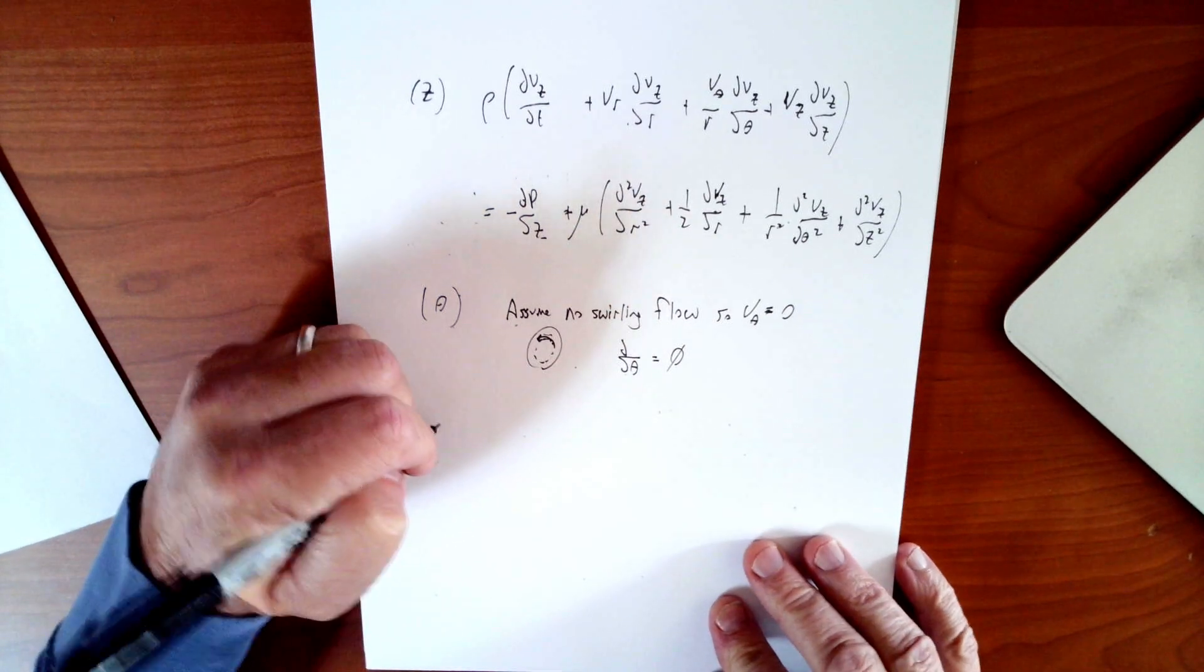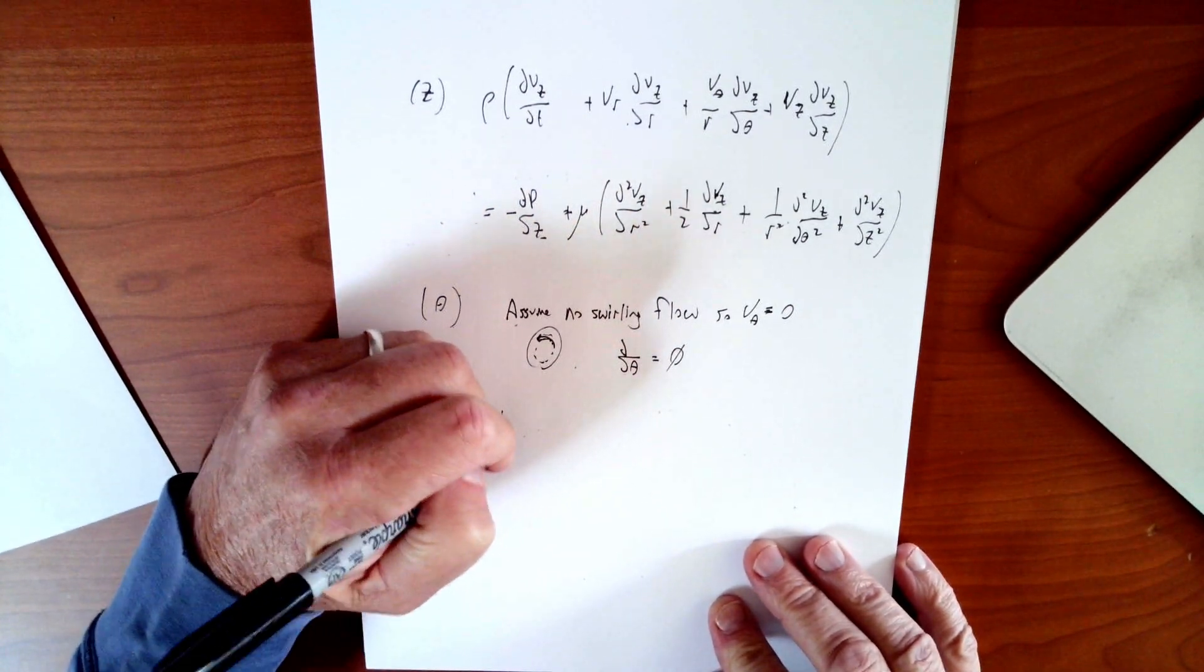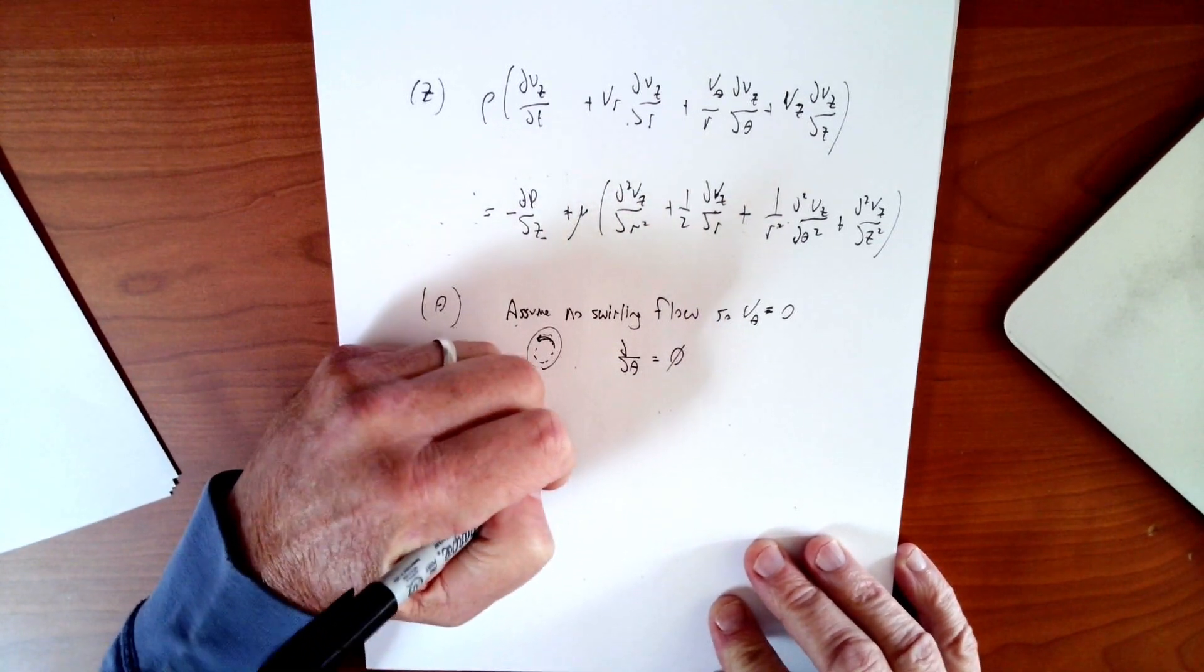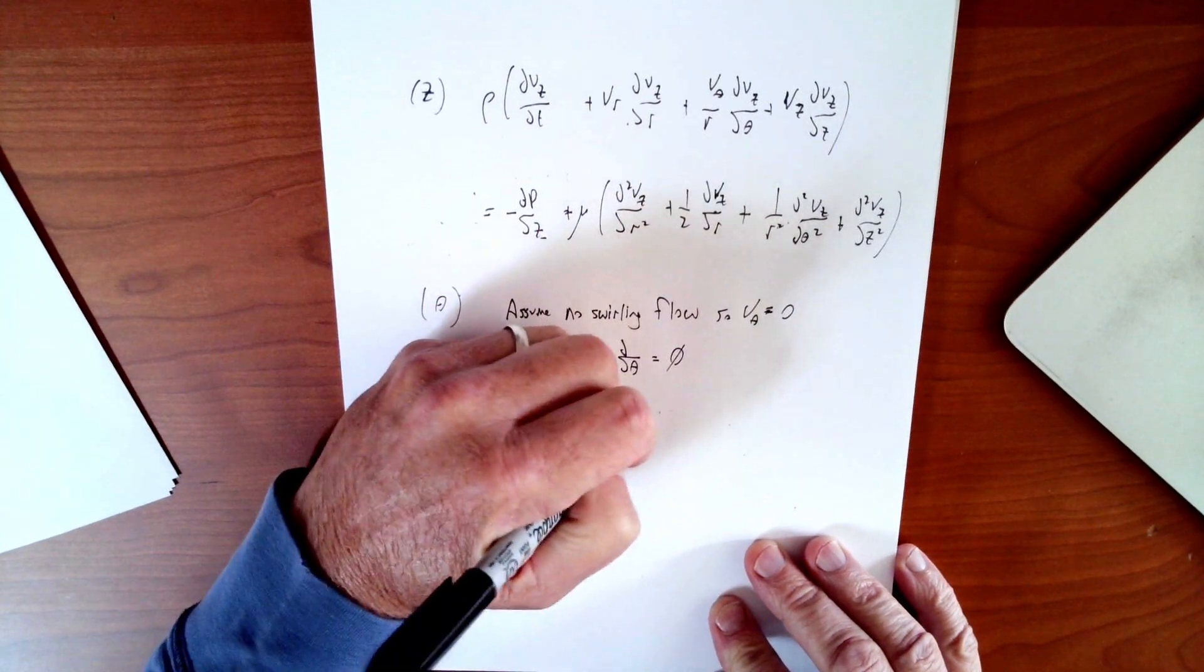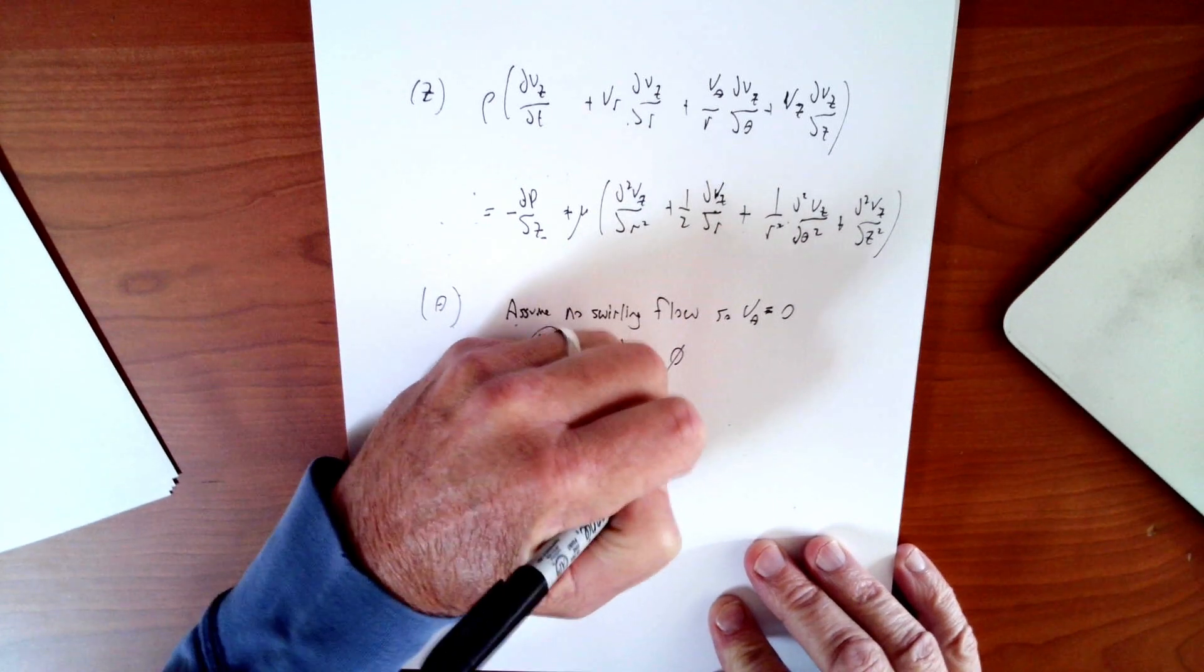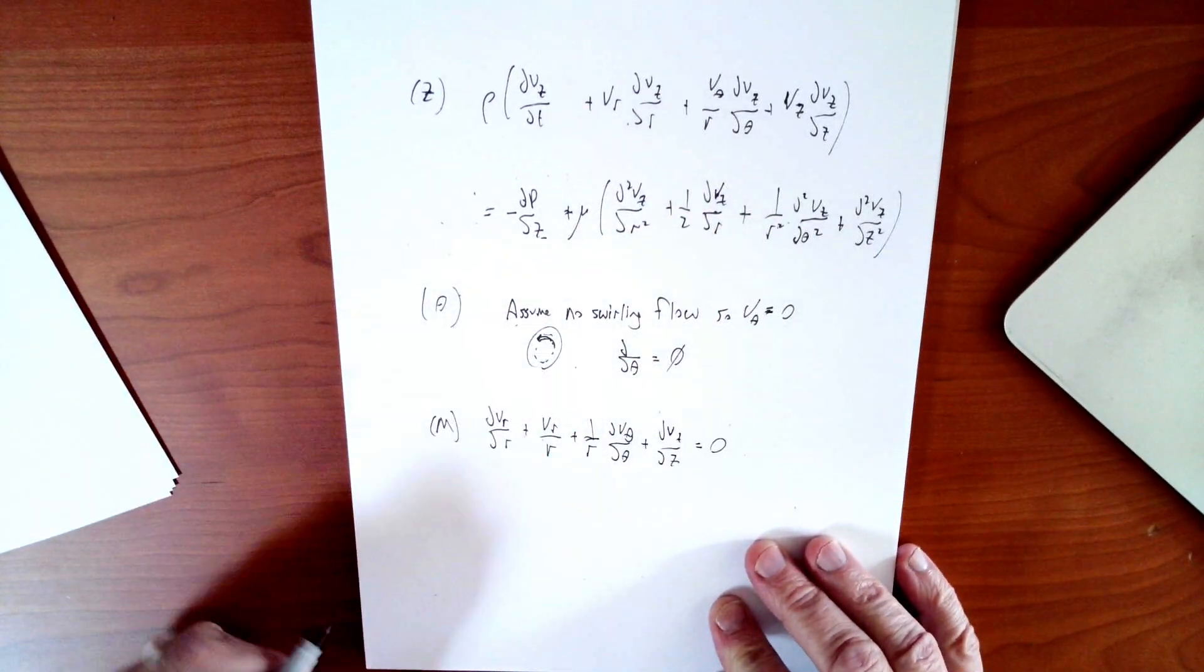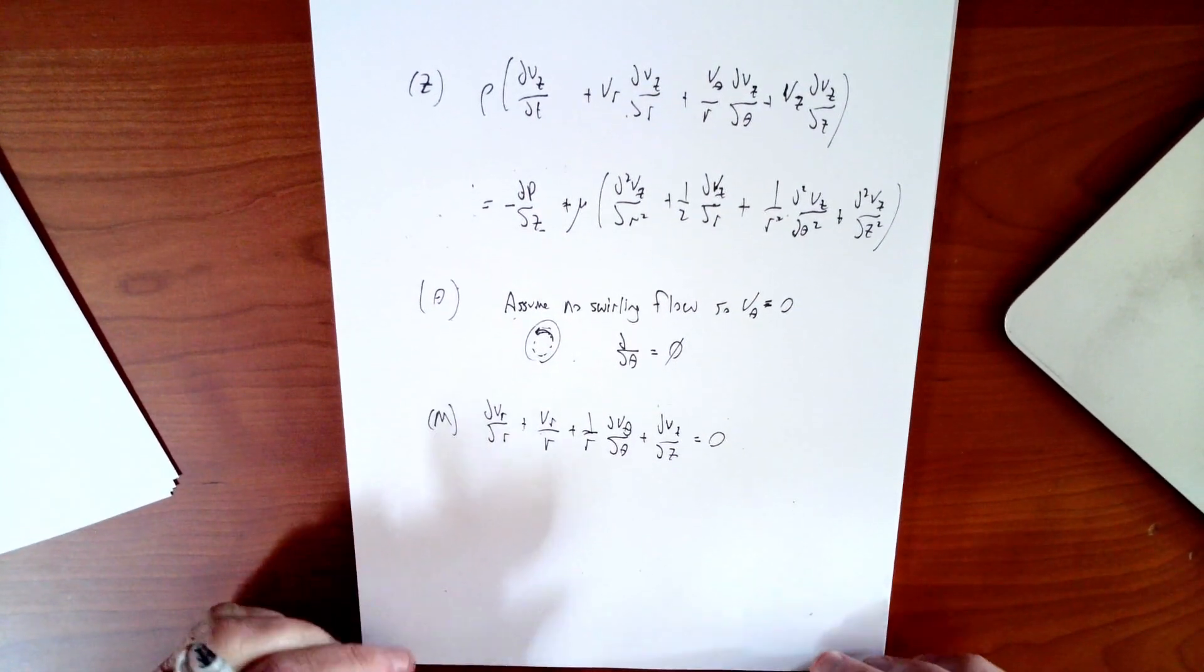Finally, we're going to need mass conservation, of course. Dvr/dr plus vr over r plus 1 over r dv theta/d theta plus dvz/dz, and that's all equal to zero. So that's our continuity equation in cylindrical coordinates for incompressible flow.